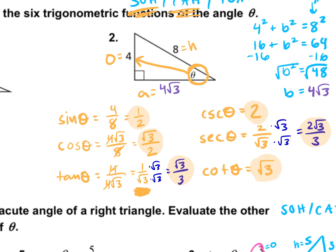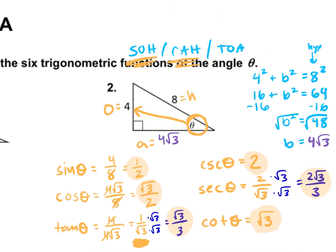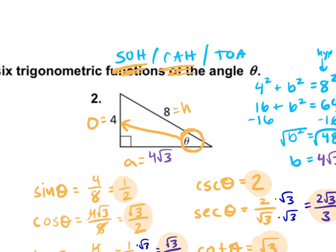On the quiz, it may only ask for three of the trig functions. It's helpful to know that sine pairs with cosecant, cosine pairs with secant, and cotangent pairs with tangent. So if the question only asks for secant, you can just find cosine first and then flip it.